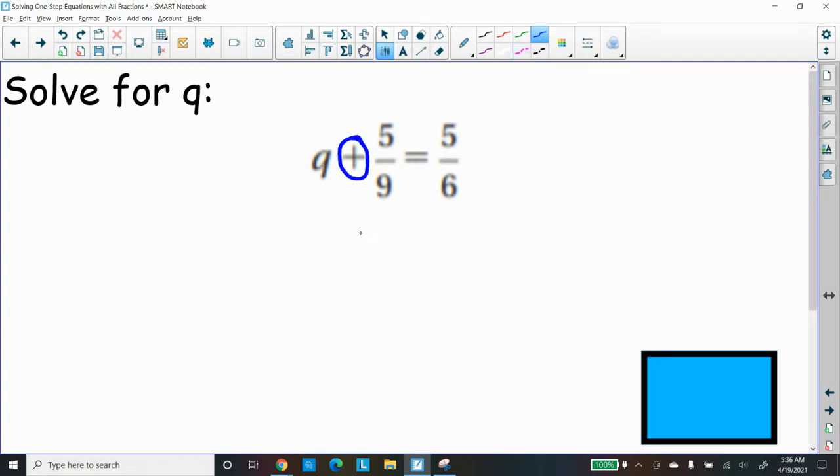Remember the steps. Let's undo by using either addition or subtraction property. That's going to be addition of 5 ninths. We're going to undo it by subtracting 5 ninths from both sides. And what that does, it cancels out the 5 ninths, leaving us with Q equal to 5 sixths minus 5 ninths.